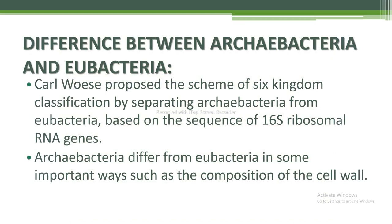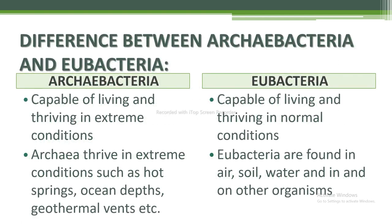Next I am going to discuss the difference between Archaebacteria and Eubacteria. Carl Woese proposed the six kingdom classification scheme by separating Archaebacteria from Eubacteria based on the sequence of 16S ribosomal RNA genes. Archaebacteria differ from Eubacteria in some important ways, such as the composition of the cell wall.